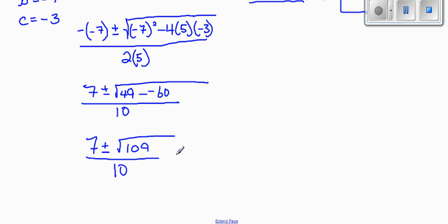Now it really depends. I'm not sure where the computer left this answer, but at this point, basically what we have to realize is that we have 7 plus the square root of 109 over 10, and we have 7 minus the square root of 109 over 10.